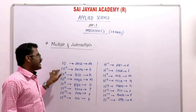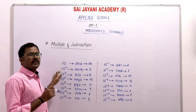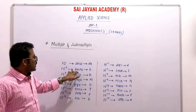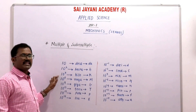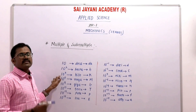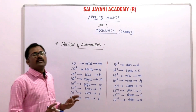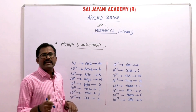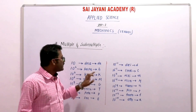10 squared equals 100, and 100 is known as hecto, represented by small 'h'. So the symbols for deca and hecto are small 'da' and small 'h' respectively. Next, 10 to the power 3 means 1000, and 1000 is called kilo — for example, 1 kilogram means 1000 grams. So 10 to the power 3 is kilo, represented by small 'k'. The powers 10, 10², and 10³ are all represented by small letters.